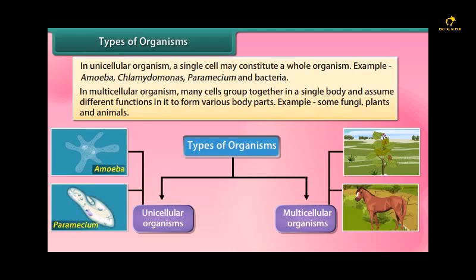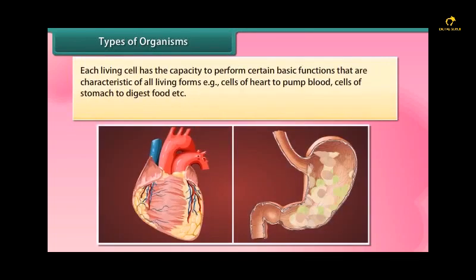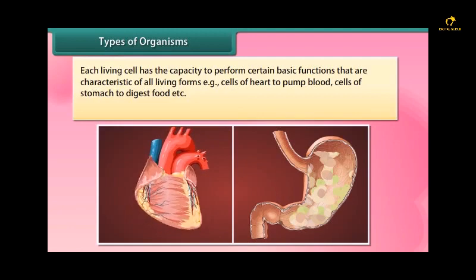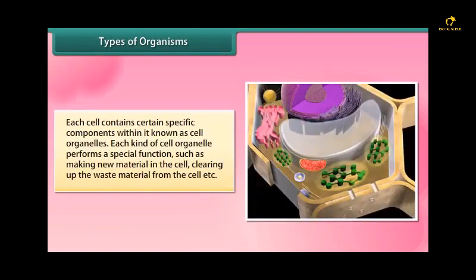Each living cell has the capacity to perform certain basic functions that are characteristic of all living forms. That is, cells of heart to pump blood, cells of stomach to digest food, etc. Each cell contains certain specific components within it known as cell organelles.